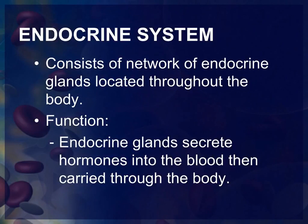The endocrine system is made up of various types of endocrine glands that are located throughout the body. The endocrine glands produce and secrete various types of hormones, which are carried in the blood and then have an effect on other parts of the body.